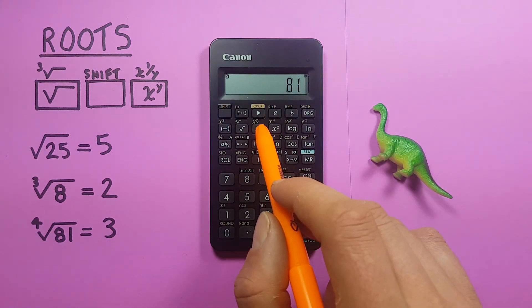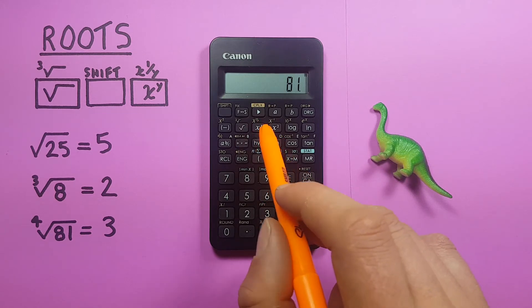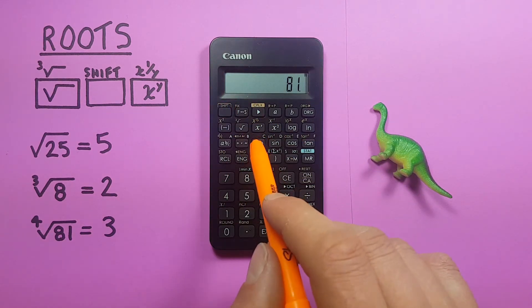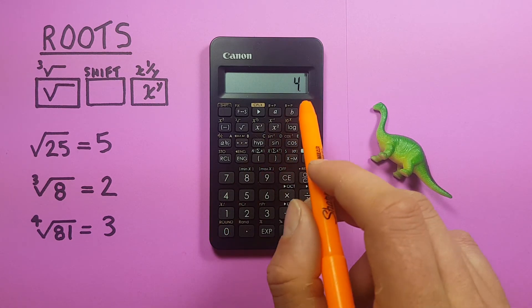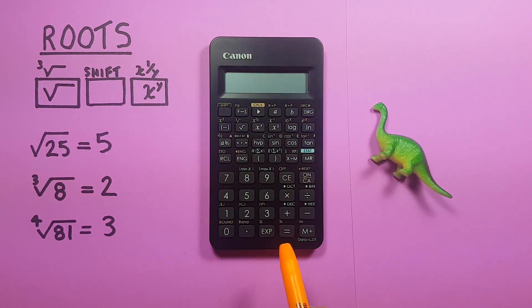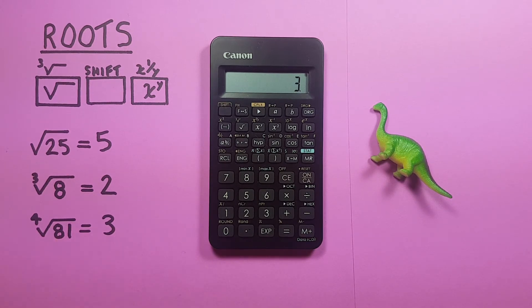And then this x to the y key, the S has disappeared, so that means that key has been activated. And then 4, because that's our root value, press equals, and we get the result. Fourth root of 81 is 3.